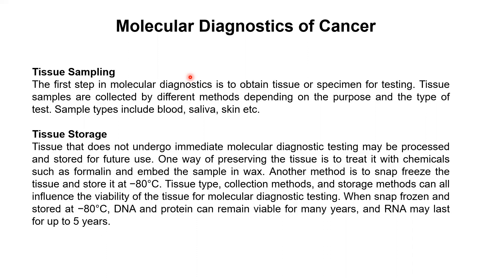The sample must be kept safe and in viable condition. Methods include treating with chemicals like formalin and embedding in paraffin wax to keep the sample safe for a few hours, or snap-freezing using liquid nitrogen and storing at minus 80 degrees Celsius. The type of tissue, method, and storage all influence sample viability. DNA and protein stored at minus 80°C can survive for many years, while RNA may survive for around three to five years maximum.